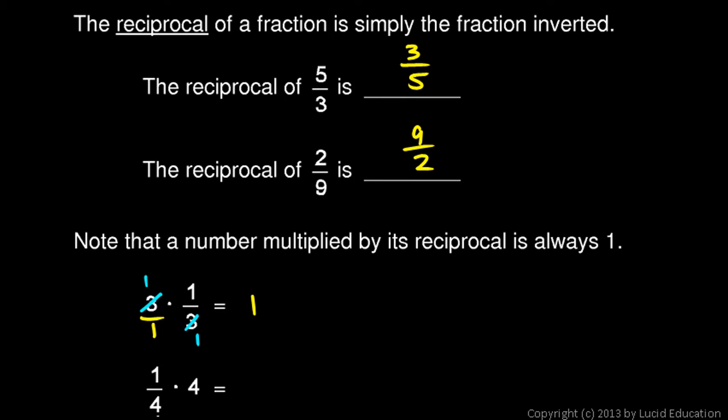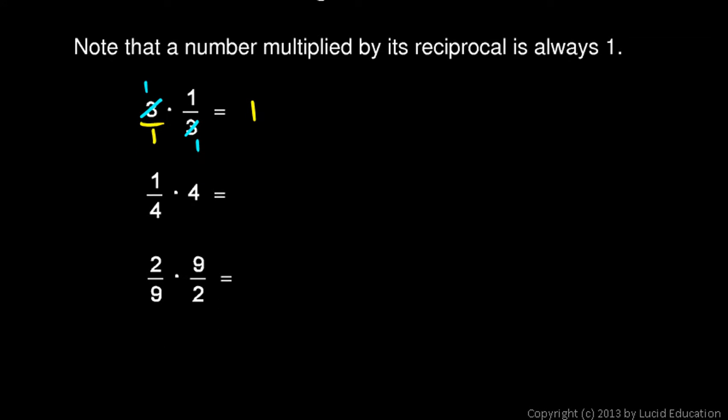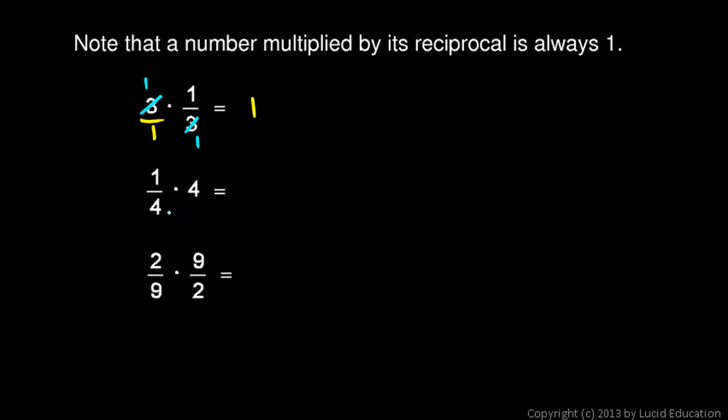The same thing will happen with these other fractions as well. Whenever you multiply a number by its reciprocal, you get 1. Once again, here, this 4 could be thought of as 4 over 1, and then this 4 is in the numerator, and that one's in the denominator, and those reduce, and you just end up with 1 for an answer.